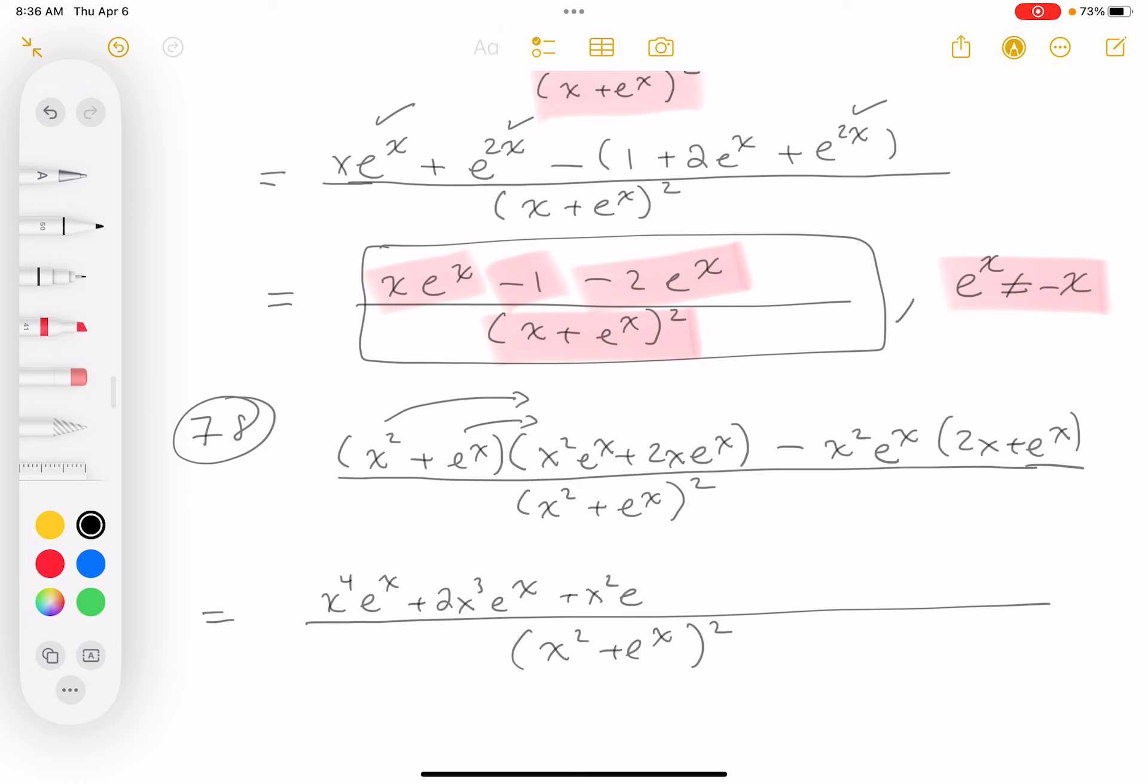Then I'm gonna distribute this e to the x across those two terms. We're gonna get x squared e to the 2x plus 2x e to the 2x. Not much I can do about that. Let's do this now—take this term, duplicate these two over here, and again subtracting them. So what do you get? Minus 2x cubed e to the x.